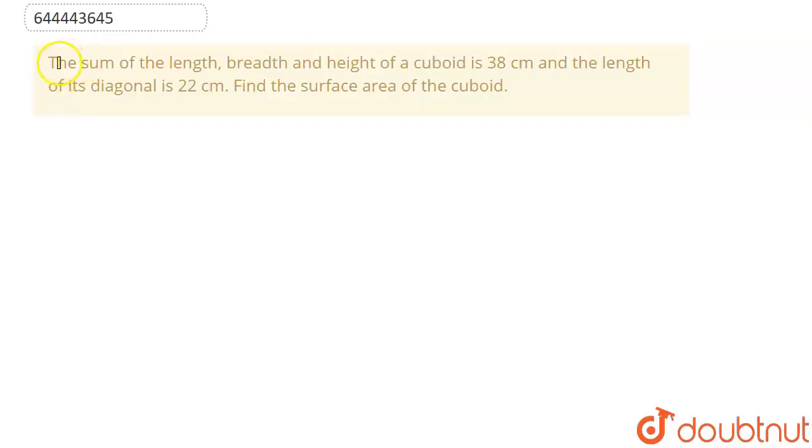We are given here the question: Sum of length, breadth and height of a cuboid is equal to 38 cm and length of its diagonal is equal to 22 cm. We have to find surface area of cuboid.